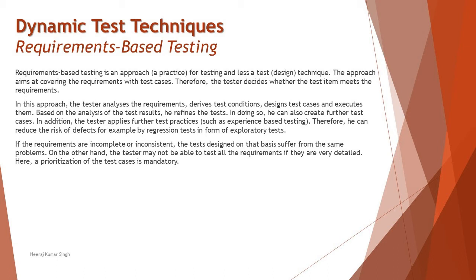A tester can reduce the risk of defects, for example, by regression tests in the form of exploratory testing. If the requirements are incomplete or inconsistent, the test design based on them suffers from the same problems. On the other hand, the tester may not be able to test all requirements if they are very detailed, because not everything can be covered at the same time — recall principle number two: exhaustive testing is impossible. When requirements are very detailed, every minute thing needs to be covered, but not everything can actually be covered when you have strict deadlines to deliver a product to market.